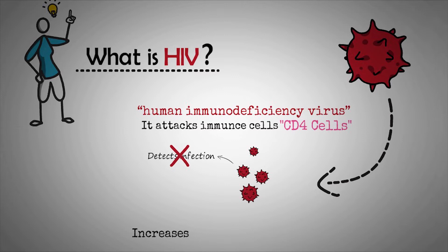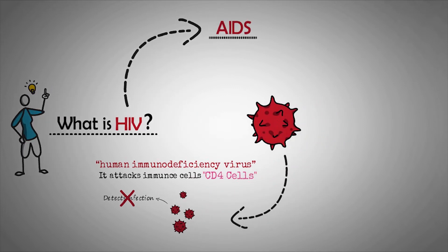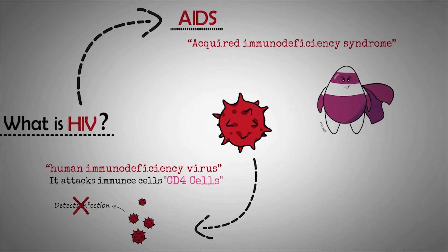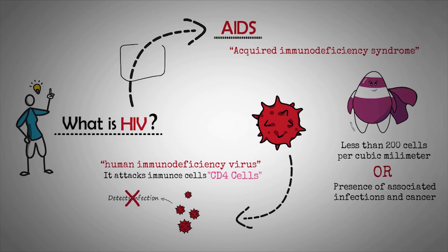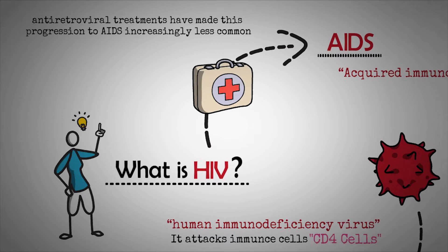This increases the risk and impact of opportunistic infections and some types of cancer. Without treatment, the infection might progress to an advanced stage called AIDS, which stands for Acquired Immunodeficiency Syndrome. Doctors identify AIDS as having a CD4 count of fewer than 200 cells per cubic millimeter, or if a person has characteristic opportunistic infections, associated types of cancer, or both. However, advances in antiretroviral treatments have made this progression to AIDS increasingly less common.